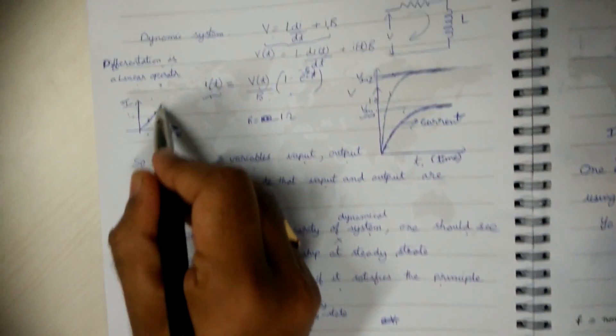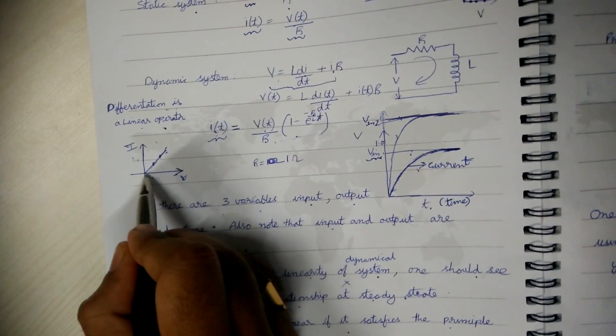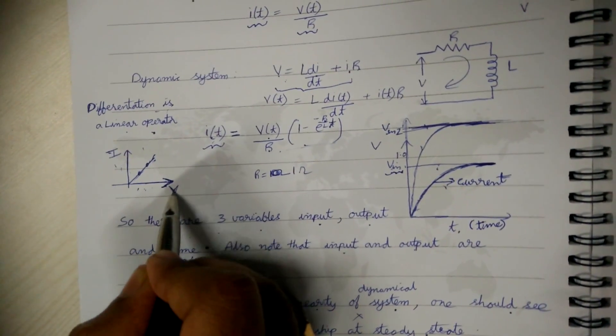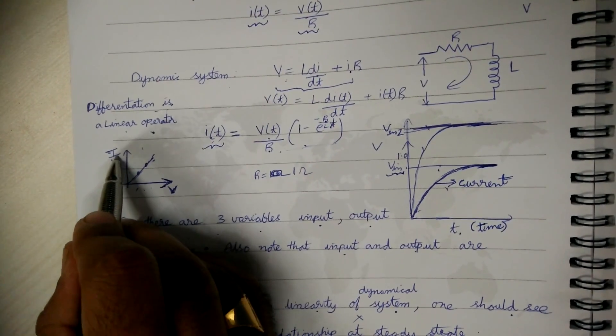So the main point is we should see the linearity with respect to input and output at steady state or at the equilibrium point, not with respect to time.